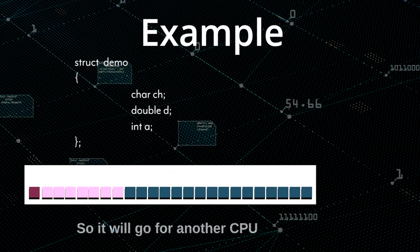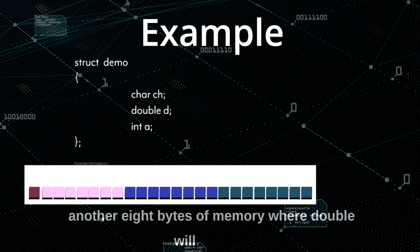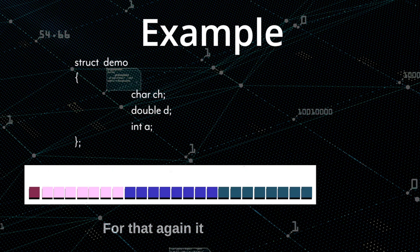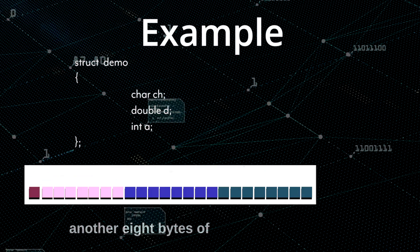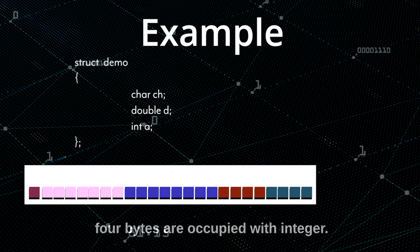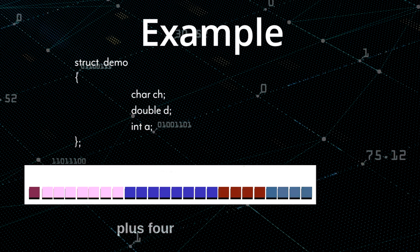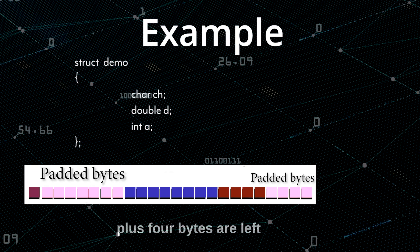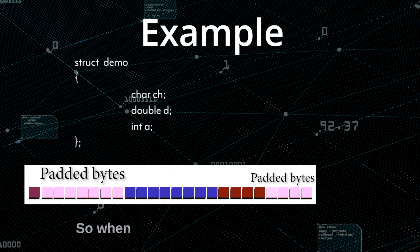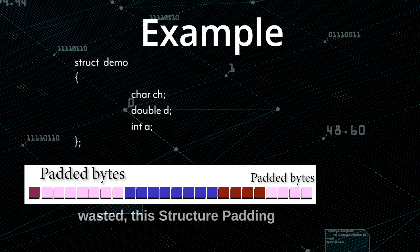The next member, double, cannot be stored in those seven bytes, so it will go for another CPU cycle and get another eight bytes of memory where double will occupy. Then for the third member, integer, it has to request another eight bytes of memory in which only four bytes are occupied. So in total, seven bytes plus four bytes are left empty.